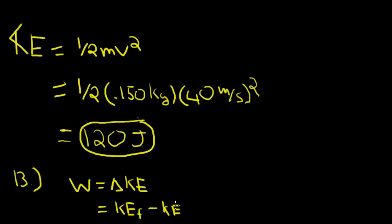Now, since the catcher stops the ball once he catches it, we know that the final kinetic energy equals zero. And we just calculated the initial kinetic energy to be 120 joules. So we plug those both into the equation, and we have to remember that the answer is going to be negative 120 joules.